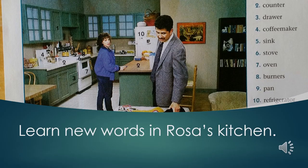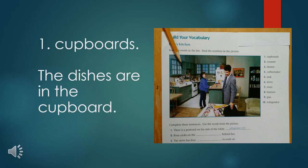The next exercise is practicing vocabulary. We will learn new words in Rosa's kitchen. Find page 49 in your worksheets and we'll work together. The first word is cupboards. My pencil is pointing to number one in the photo — do you see it? This is a cupboard. The dishes are in the cupboard.